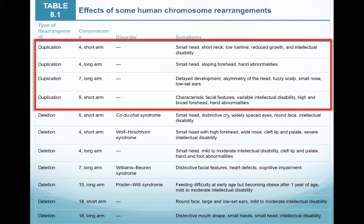A duplication on the long arm of chromosome 7 can result in a delay in development. A duplication on the short arm of chromosome 9 can produce distinct facial features and intellectual disabilities, and some of those may come with hand abnormalities as well. For the most part, individuals are able to live with these symptoms.